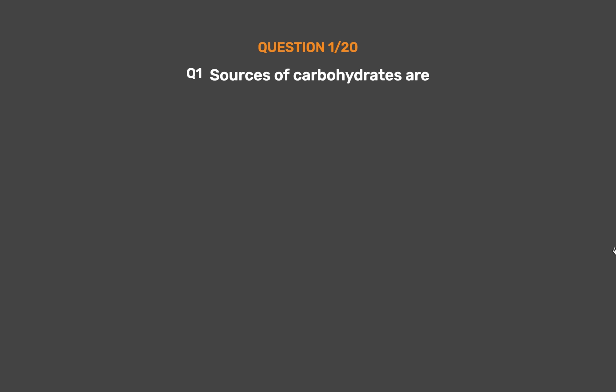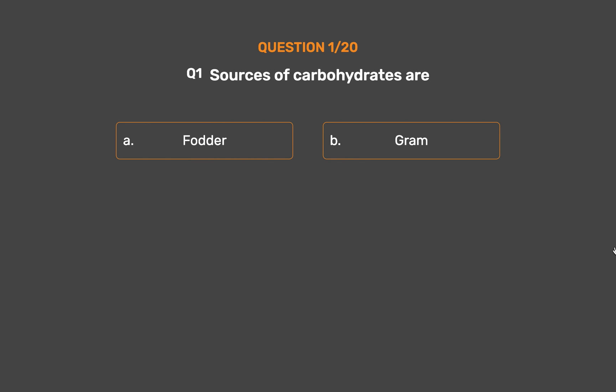Question No. 1. Sources of carbohydrates are — Option A: Fodder. Option B: Gram. Option C: Soya. Option D: Cereals.